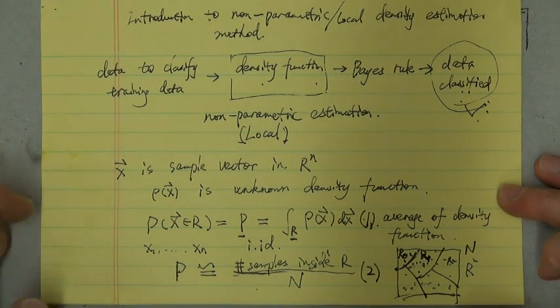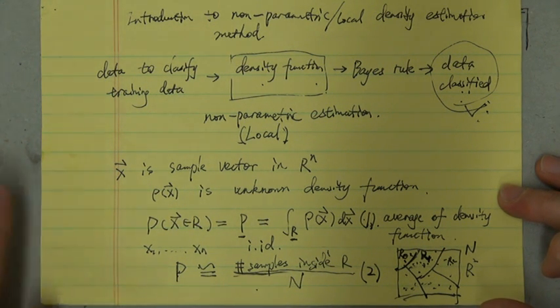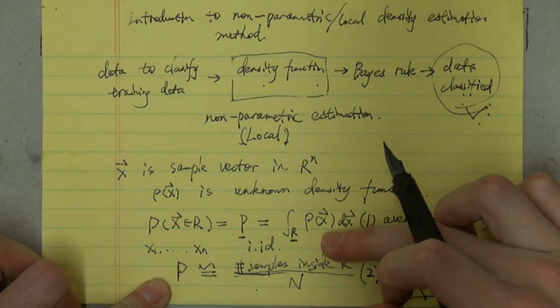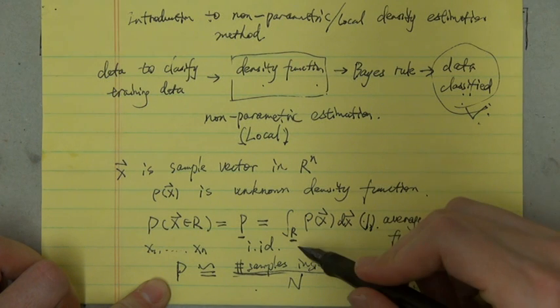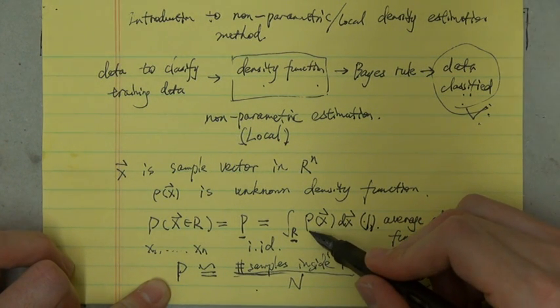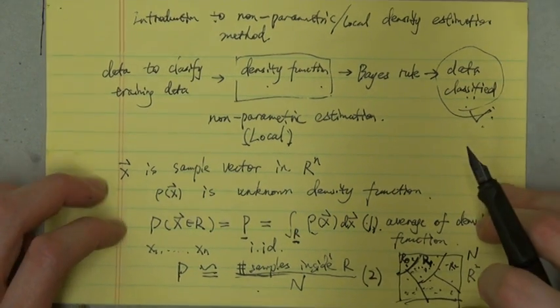So next, we assume that if ρ(x⃗) is continuous and that the region R is small enough, that ρ(x⃗) doesn't vary very much within it. So we can continue to write the equation like this.